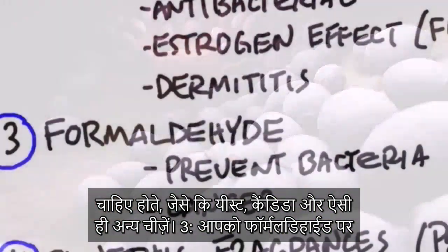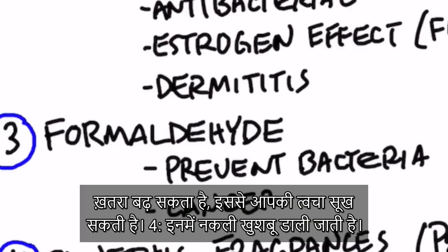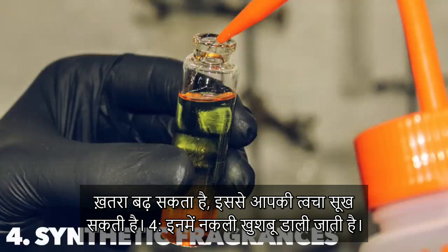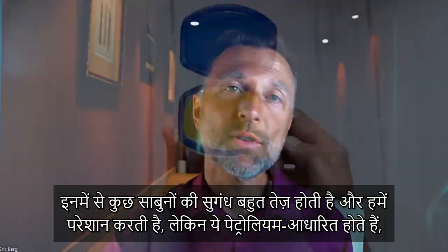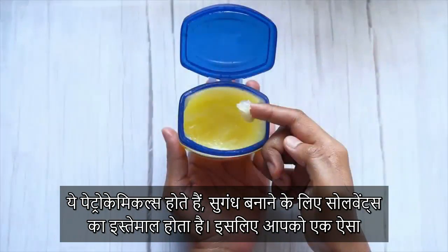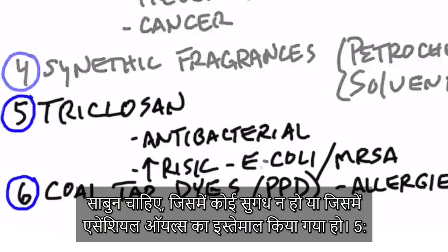Number three ingredient to watch out for is formaldehyde. It's great to embalm a body, but not to embalm your face. It can increase your risk of getting cancer and it can really dry out your skin. The next one is synthetic fragrances — some of these soaps are so strong and so irritating, and they're petroleum-based petrochemicals. They're solvents used to make these fragrances, so you really want a soap that's either fragrance-free or that only uses essential oils.